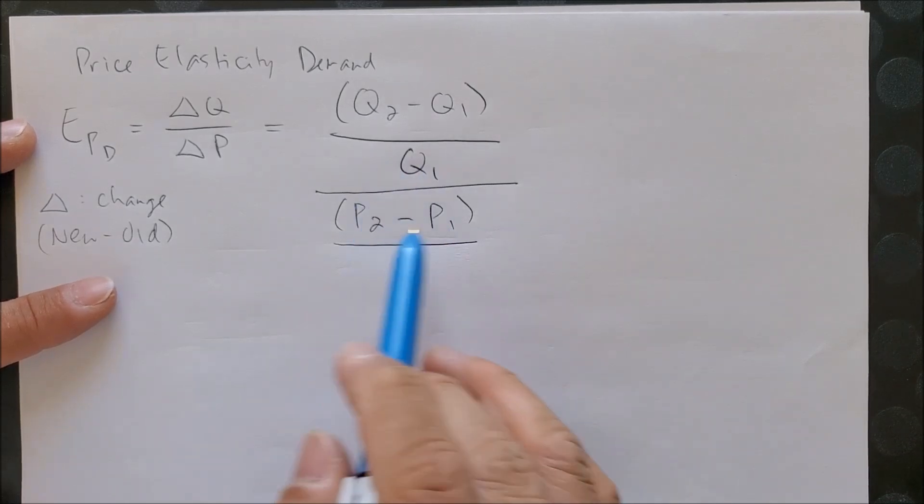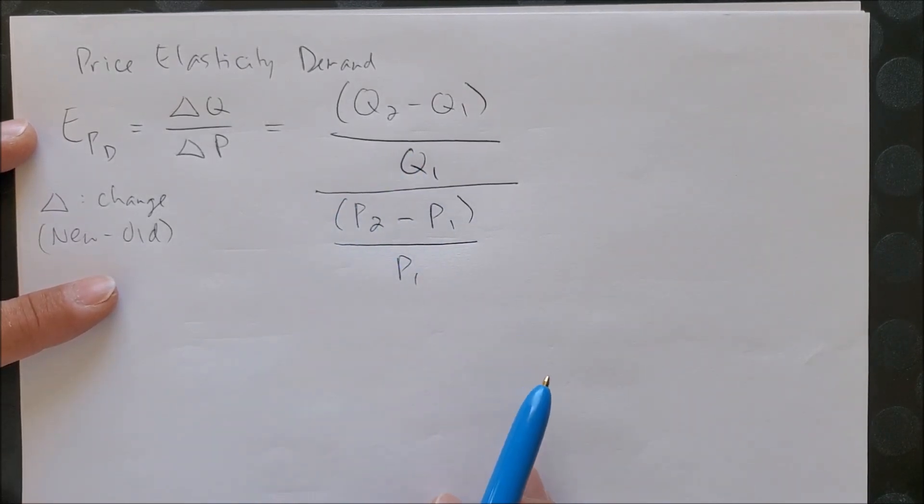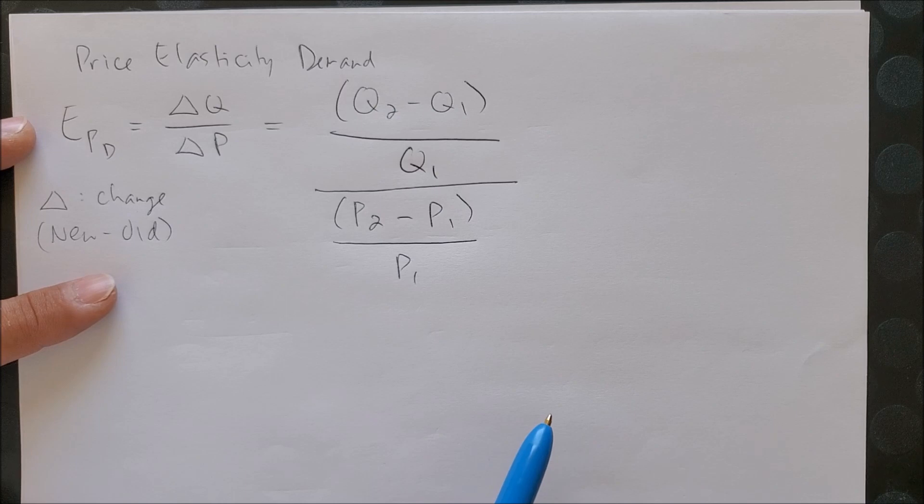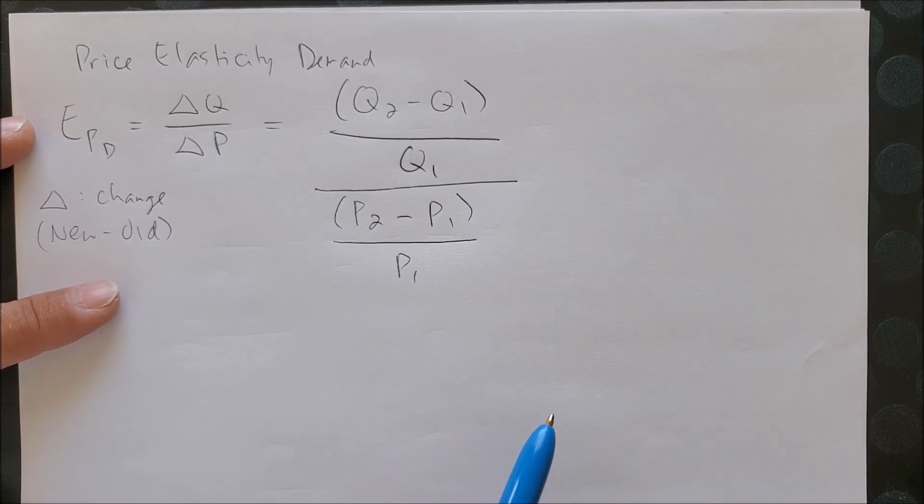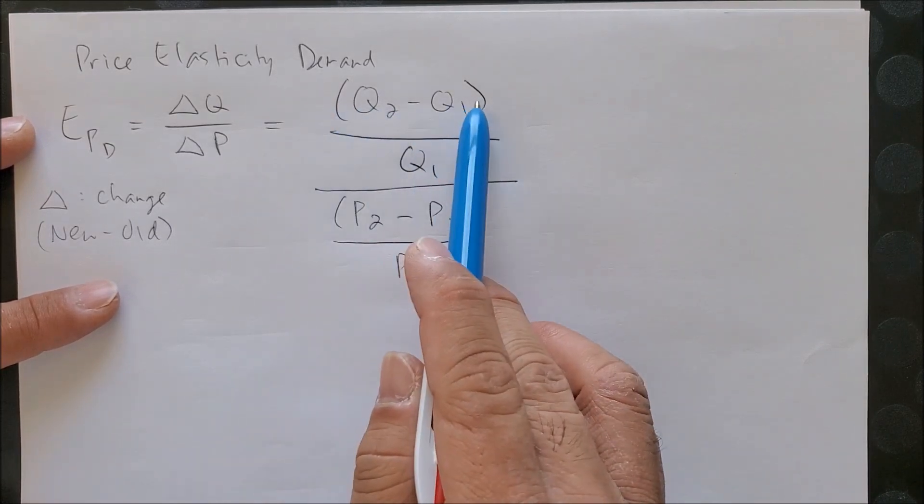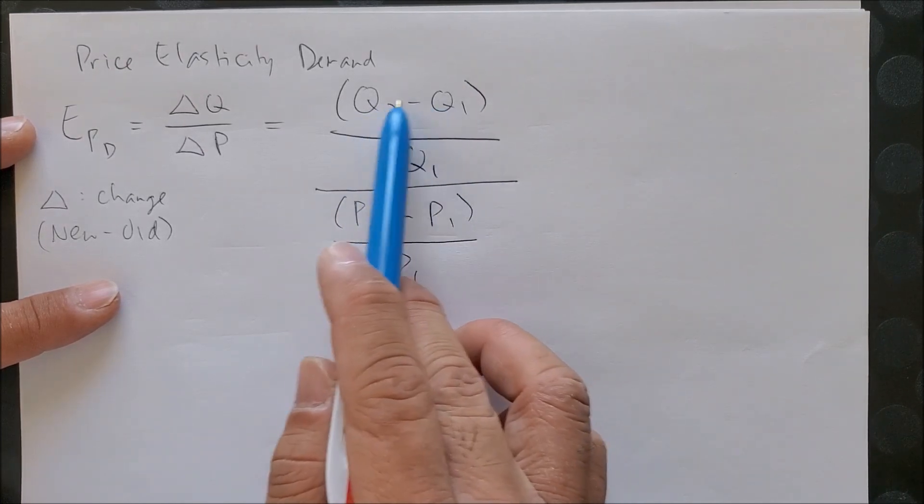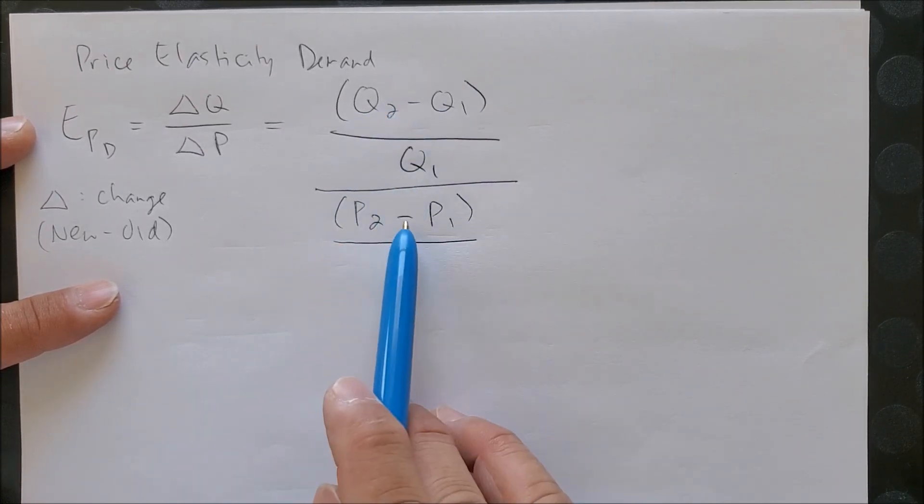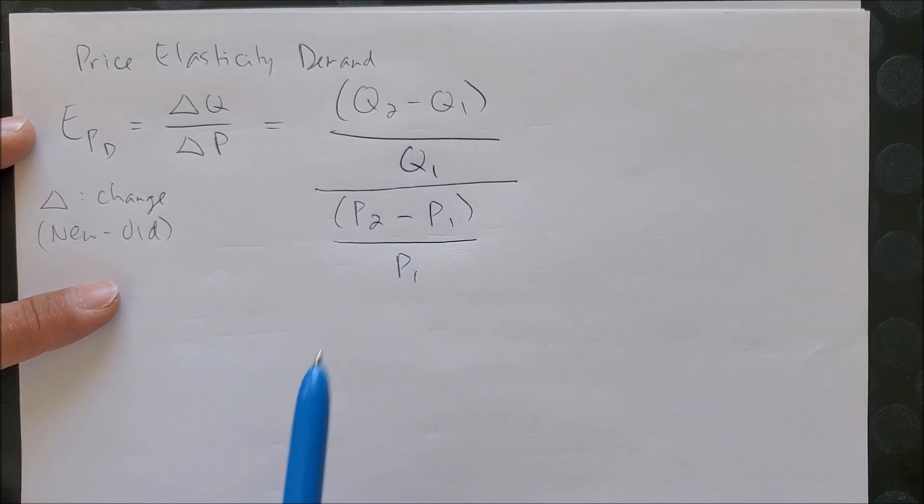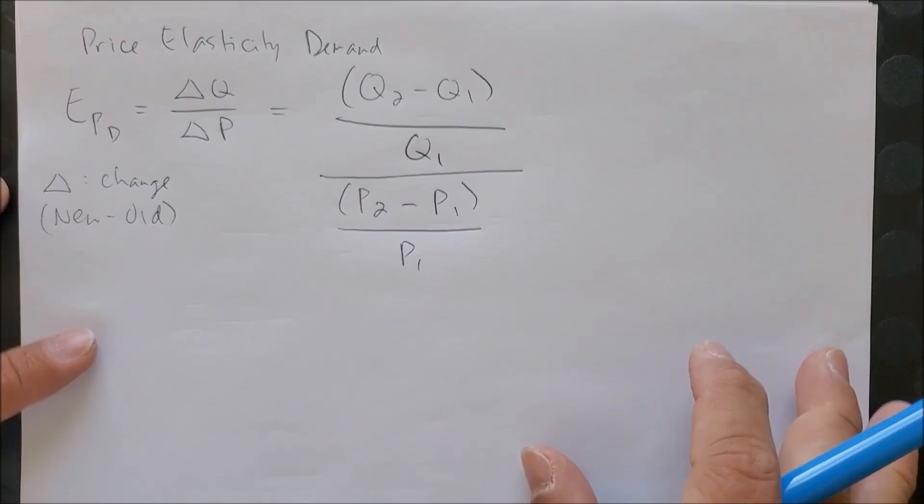So now we have a new equation we can use when numbers are not in percent format. Notice that we have parentheses, which means we have to calculate the parentheses first before we actually divide by q or p.